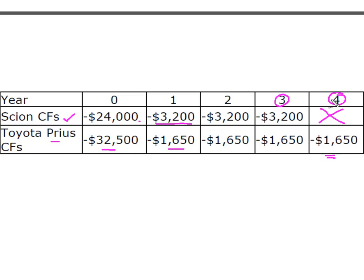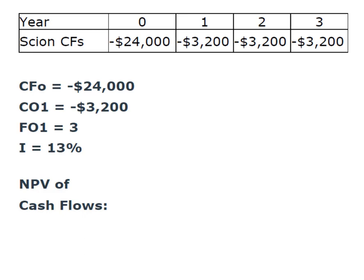We're gonna calculate the EAC for the Scion first. In year zero I'm gonna have a negative $24,000, and then my cash flow in year one is gonna be negative $3,200, and that's gonna be the same for all three years. We have a cost of capital of 13%, and we're gonna calculate the net present value of these cash flows.